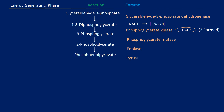During the final step, the enzyme pyruvate kinase turns phosphoenolpyruvate into pyruvate, and phosphorylates ADP into ATP through substrate-level phosphorylation, thus forming two more ATP. This step is also irreversible.